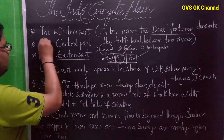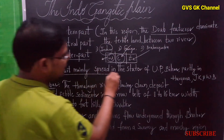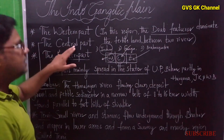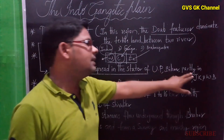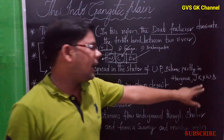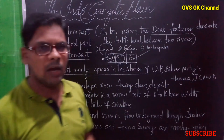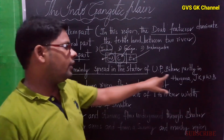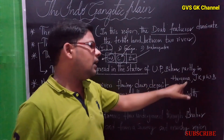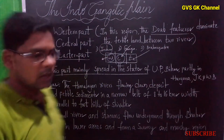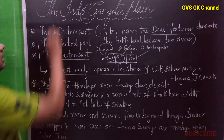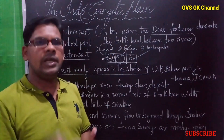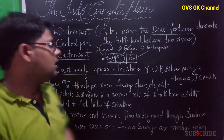The central part is mainly spread in the states of Uttar Pradesh, Bihar, and partly in Haryana, Jharkhand, and West Bengal. The western part's main portion is in Pakistan, with a small portion in Punjab and Haryana states.